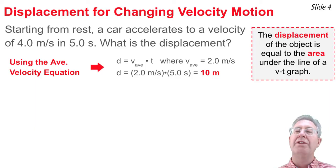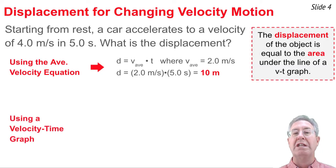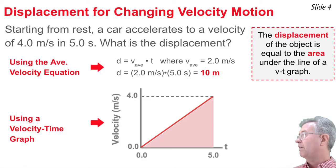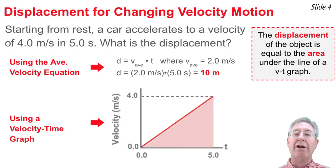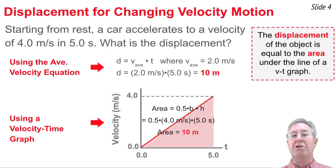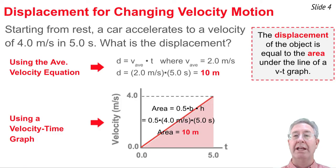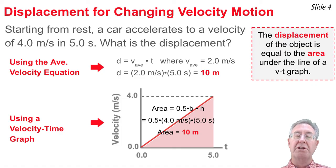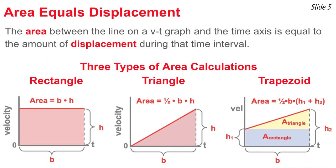Now let's test our premise using the velocity-time graph for this accelerating car. The graph shows a diagonal line from 0 m/s to 4 m/s over 5 seconds. The area between the line and the time axis is a triangle, so we use one-half times base times height: one-half times 5 times 4 equals 10 meters. That confirms our premise — the area under the line on a velocity-time graph equals the displacement of the object.